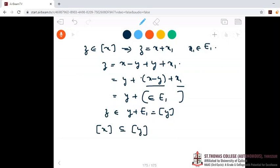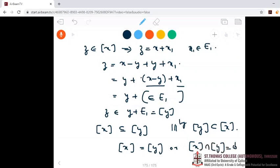If you interchange the roles of X and Y in this proof, we can prove that class Y is contained in class X also. So two cosets class X and class Y are either identical or they are disjoint. Class X intersection class Y is equal to phi.